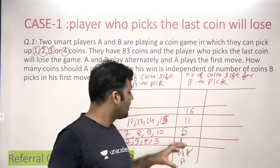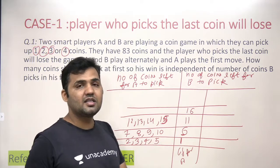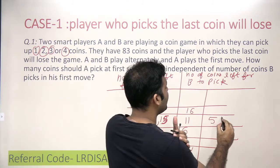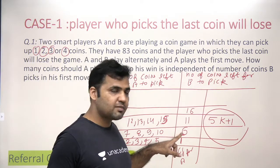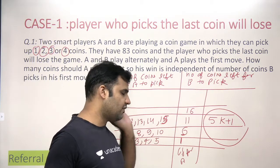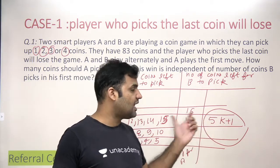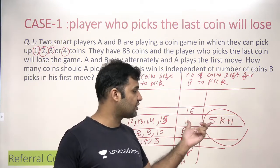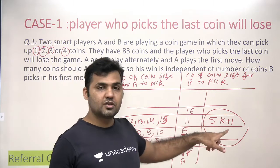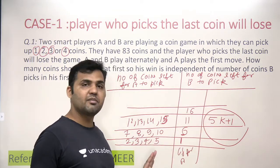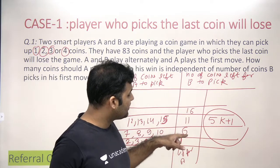This series — 1, 6, 11, 16 — follows the pattern 5k + 1: when k=0 it's 1, k=1 gives 6, k=2 gives 11, k=3 gives 16, and so on. So A's controlling factor is to always leave a number of coins of the form 5k + 1 on the table for B. If A consistently does this in every turn, A will ultimately manipulate the game and win.